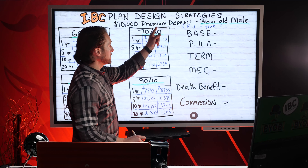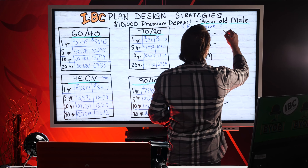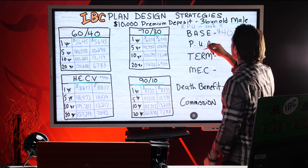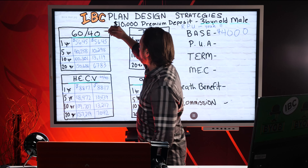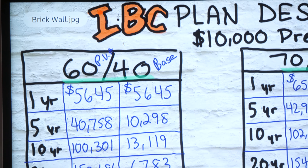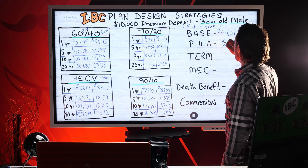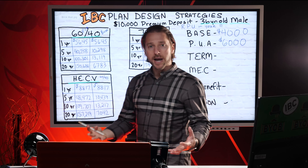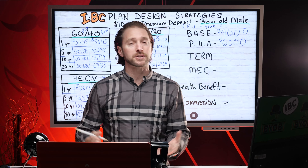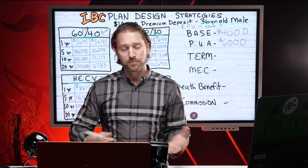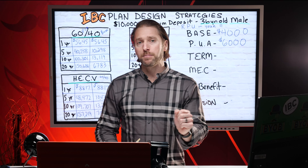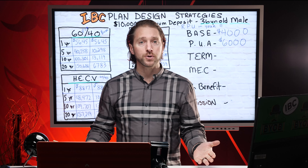60% goes into the paid-up additions, so $6,000 of your $10,000 goes into the paid-up additions rider — a rider in the contract that allows you to take your money and put it directly into the insurance company's general account. That's the money that becomes available to you immediately; that's the money you can use. So most people would say, give me the most amount of paid-up additions. We would if we could, but there are rules — the government's MEC 7-pay rule.